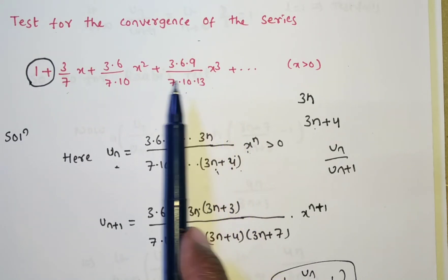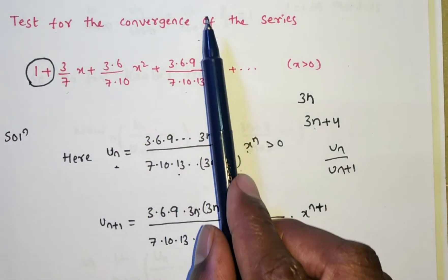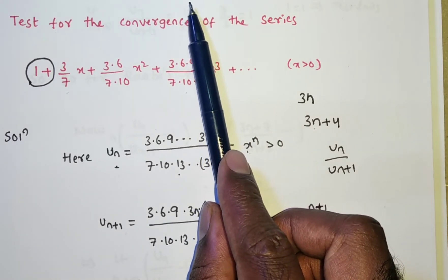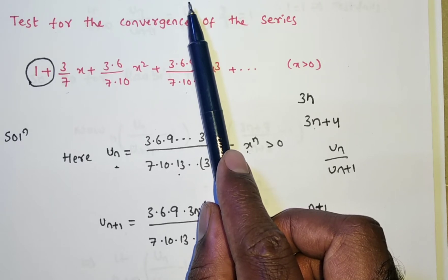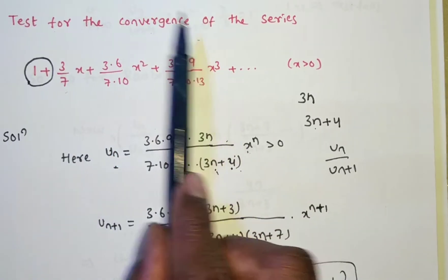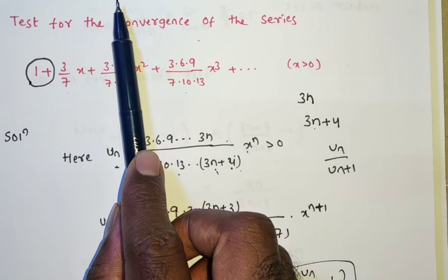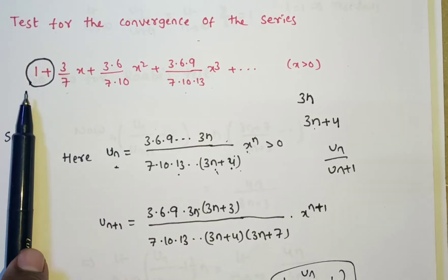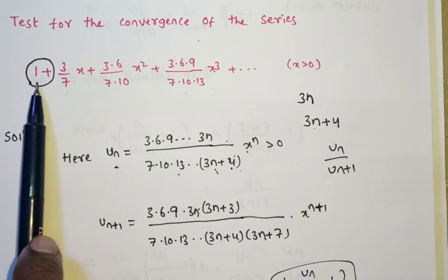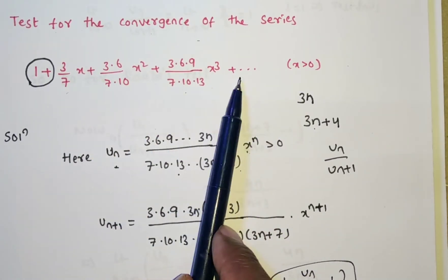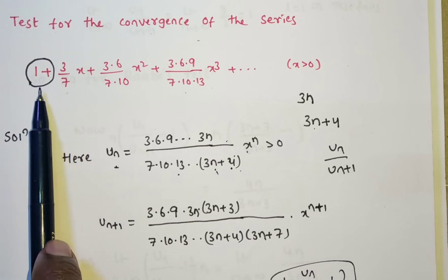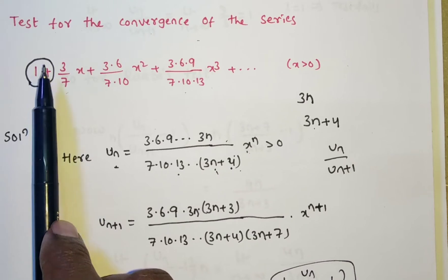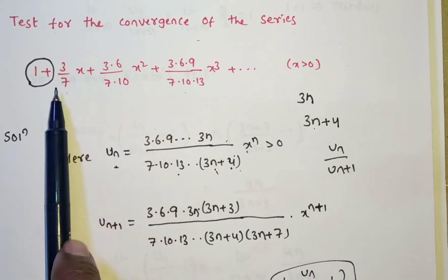To find the nth term, observe the series. This is the fourth term. If you remove the last product term from the fourth term, you see 3·6/(7·10), which is contained in the second term. Similarly, 3/7 is contained. When you remove 3/7, what remains is 1. So sometimes they give 1 or 2 extra terms. We can neglect these terms and write the nth term freely.